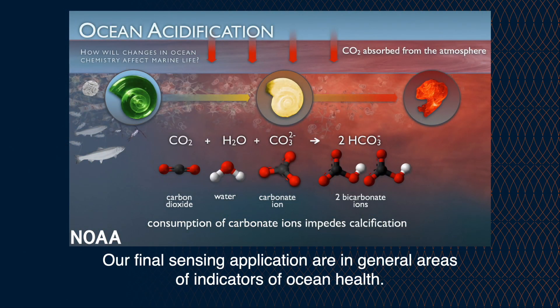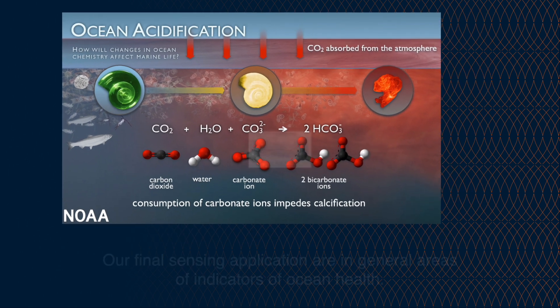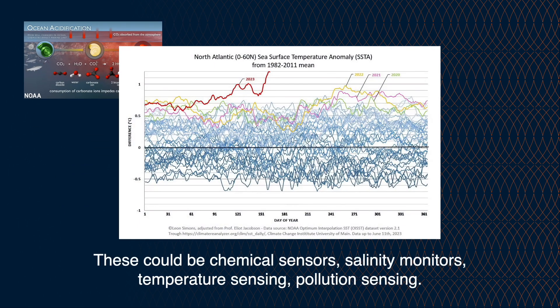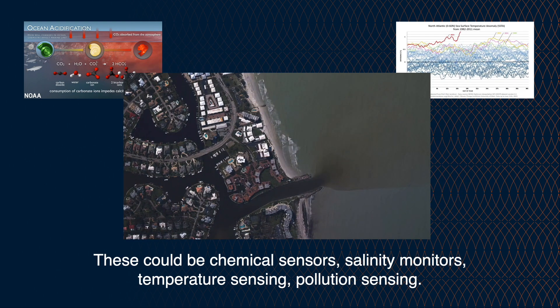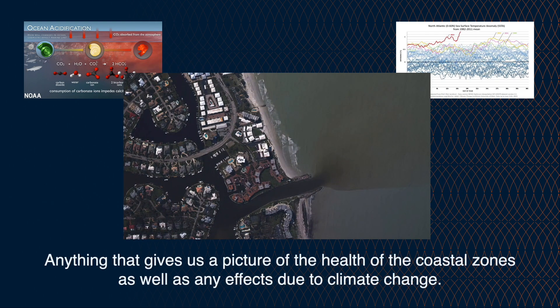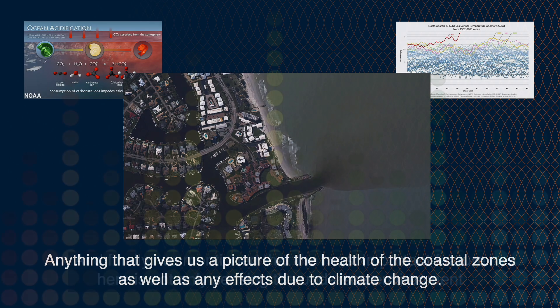Our final sensing application covers the general areas of indicators of ocean health. These could be chemical sensors, salinity monitors, temperature sensing, pollution sensing — anything that gives us a picture of the health of the coastal zones, as well as any effects due to climate change.